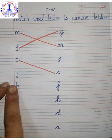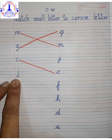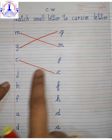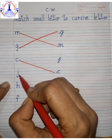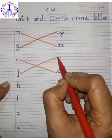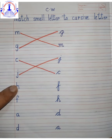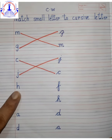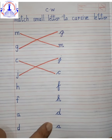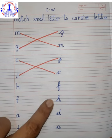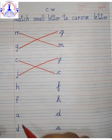Next is j — small j, and you have to match with cursive letter j. So here is cursive letter j. Come on, match small j with cursive letter j. Next is letter h. Now where is letter h? Here is letter h. So we will match h with letter h.